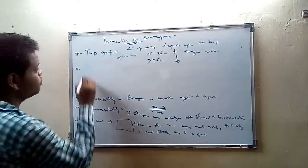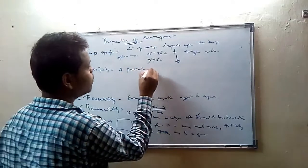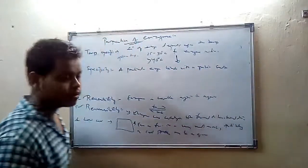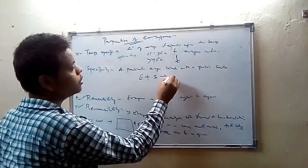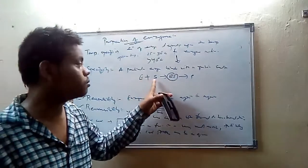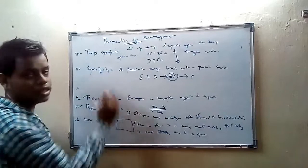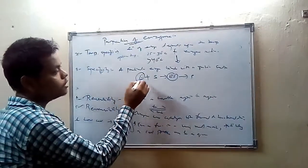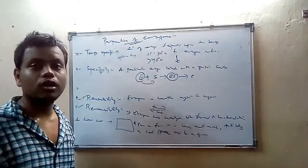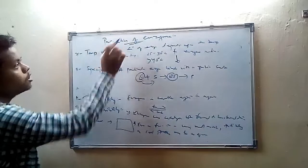Another property is specificity. Specificity means a particular enzyme binds with only a particular substrate to form an enzyme-substrate complex, which then forms the product. There is a specific enzyme for a specific substrate. An enzyme cannot react with any substrate — a particular type of enzyme binds with only a particular type of substrate. This is called the specificity of the enzyme.